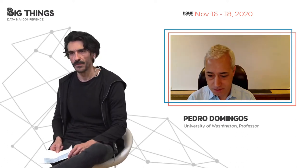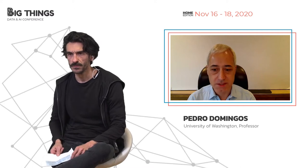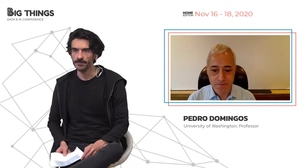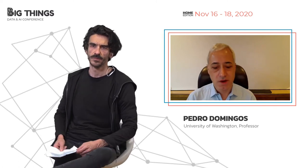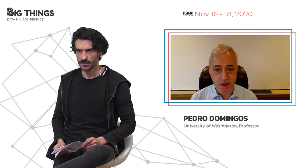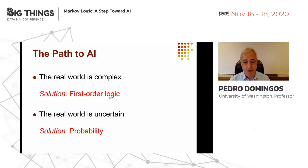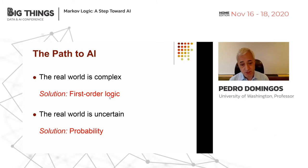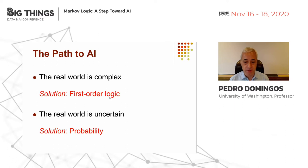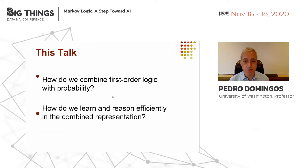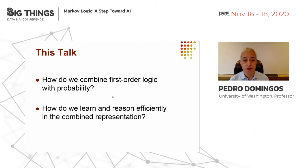All right, let's see here. Can you see my slides? Yes, we have them. Okay, very good. So I'm going to talk about unifying logical and statistical AI with Markov logic. Intelligent systems need to deal with the complexity and the uncertainty of the real world. The language of choice in AI for dealing with complexity is first-order logic, and the language for dealing with uncertainty is probability. So we need to combine the two to make progress in AI, and that's what this talk is about.